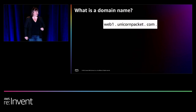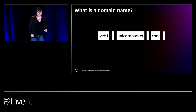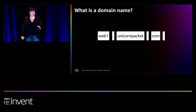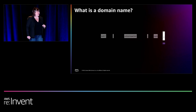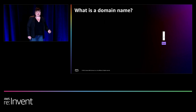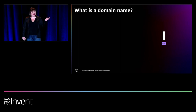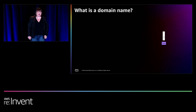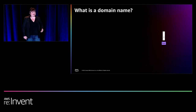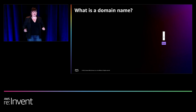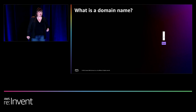So with that in mind, we are going to break apart the human-readable name web1.unicornpacket.com, explain what each part of it is going right to left, starting with that dot. DNS is structured into a hierarchy using different managed zones, and at the very top is root. The root name server — the dot seen on the screen — is in the root zone, and root name servers can directly answer queries for records stored within their zone, or provide a referral to an appropriate top-level domain.